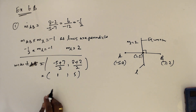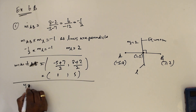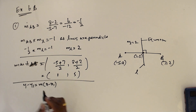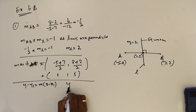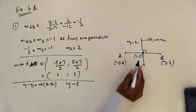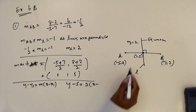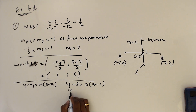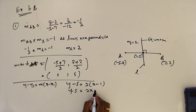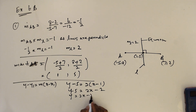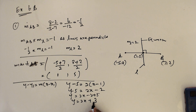Now I use the formula y minus y1 equals M times (x minus x1). So y minus 5 equals 2 times (x minus 1), giving y minus 5 equals 2x minus 2, so y equals 2x plus 3.